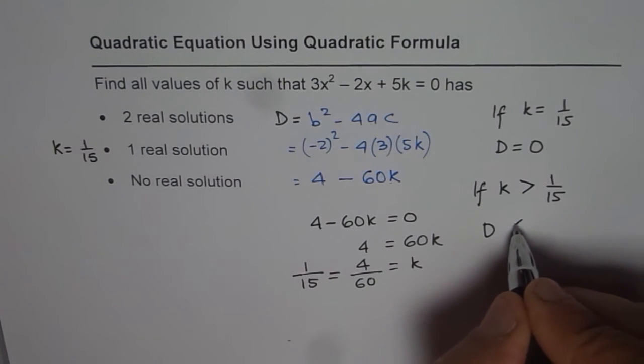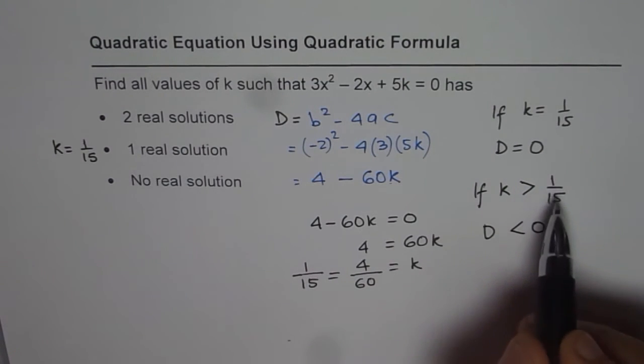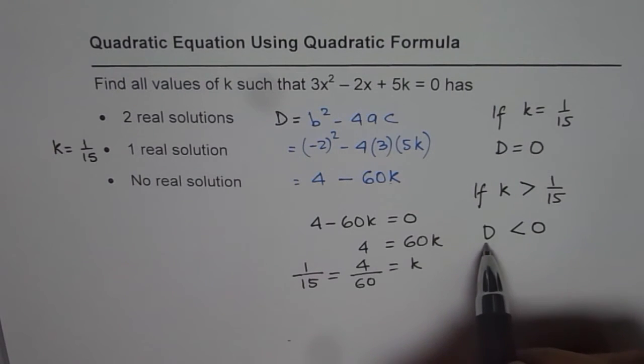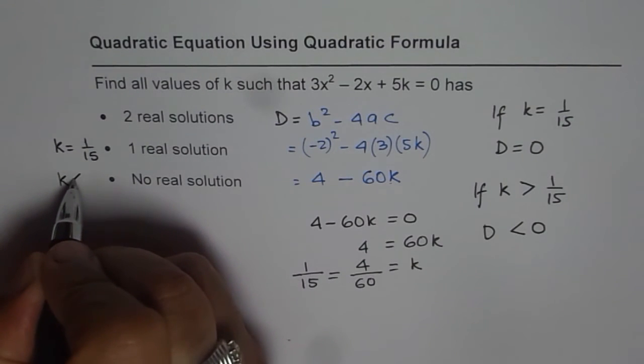So in that case, the discriminant will be negative, will be less than 0. So for k > 1/15, discriminant will be less than 0, means no real solution. So no real solution for k > 1/15.